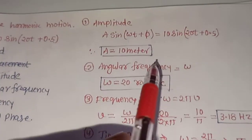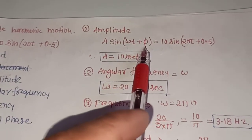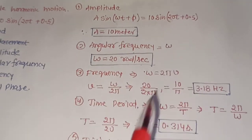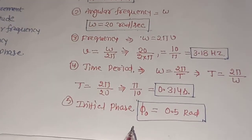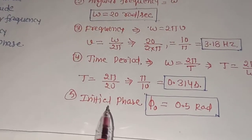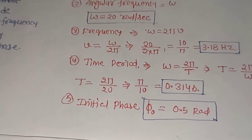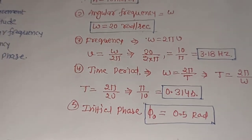Now we have to find the initial phase. Looking at the equation, the initial phase value is 0.5 radians.